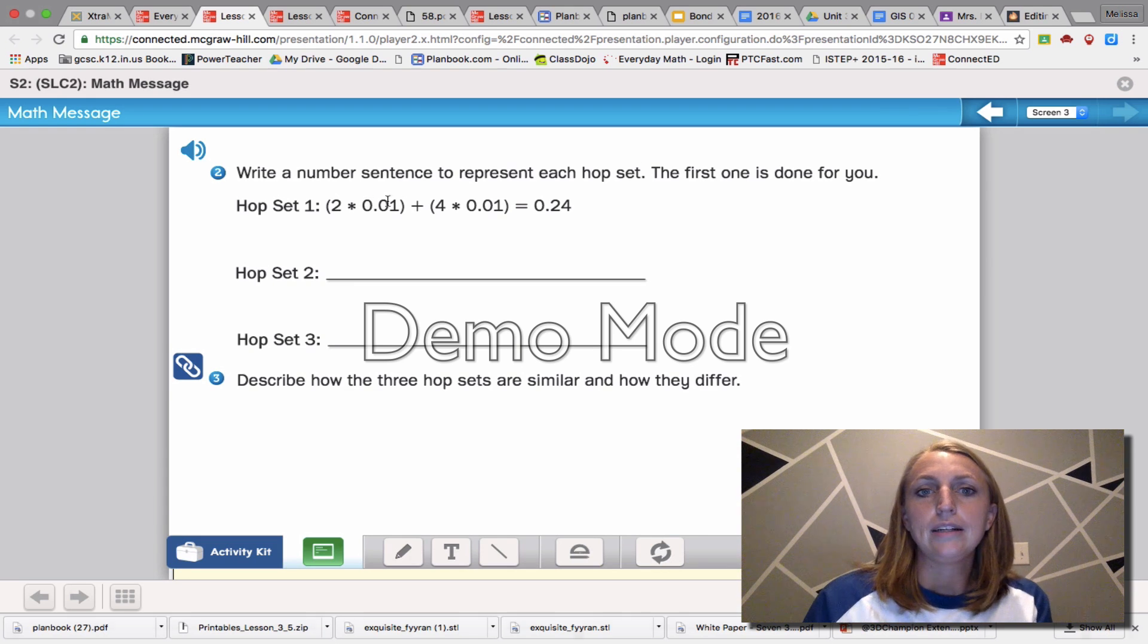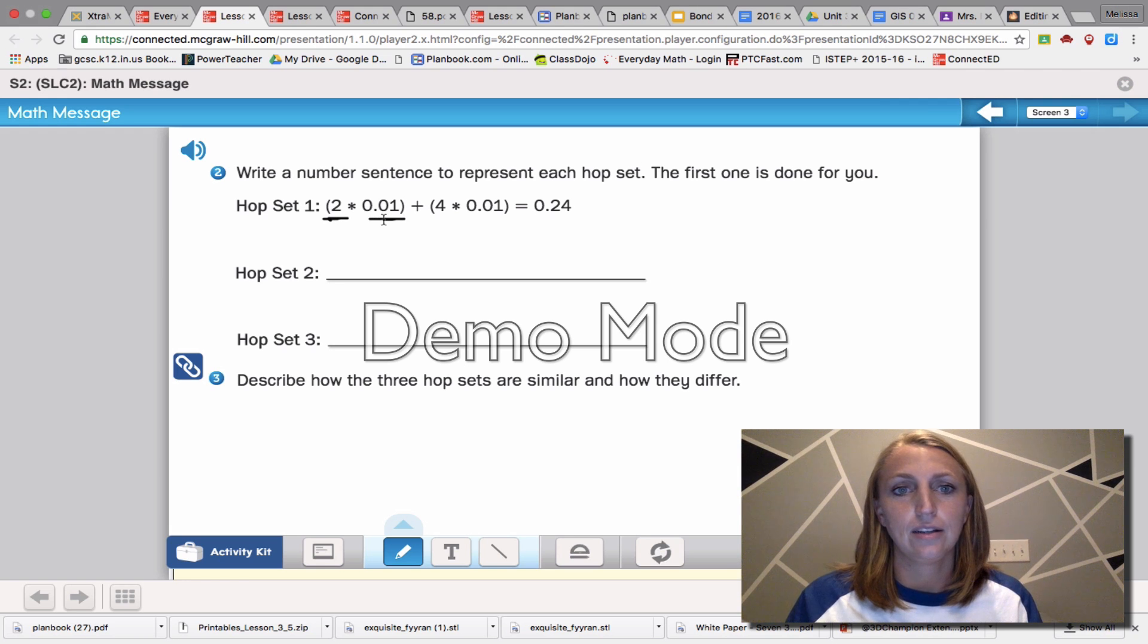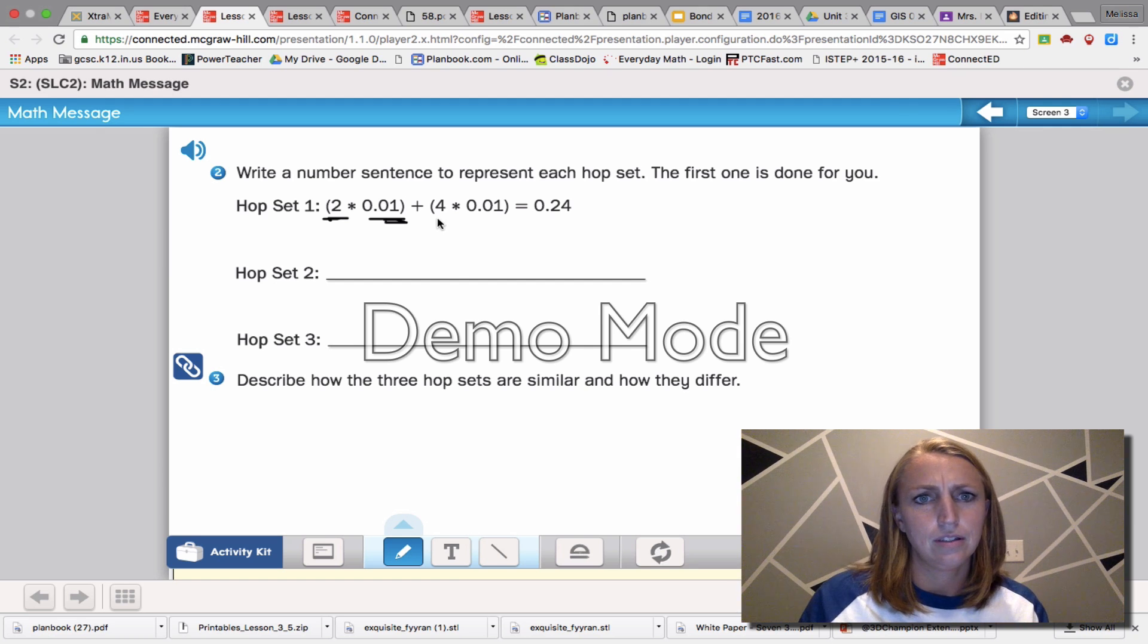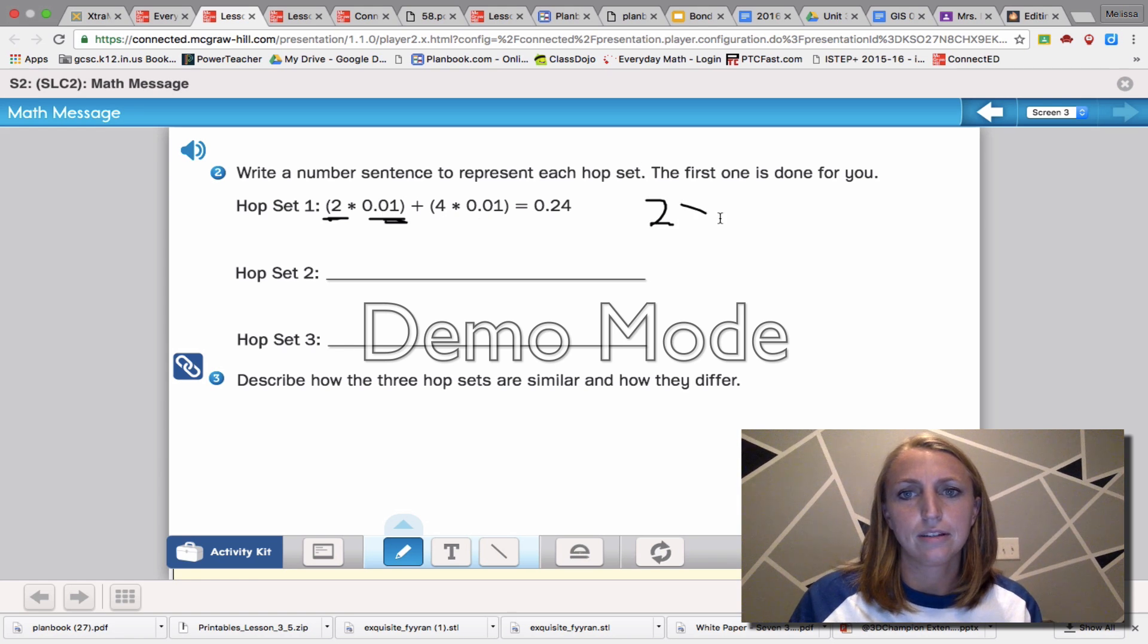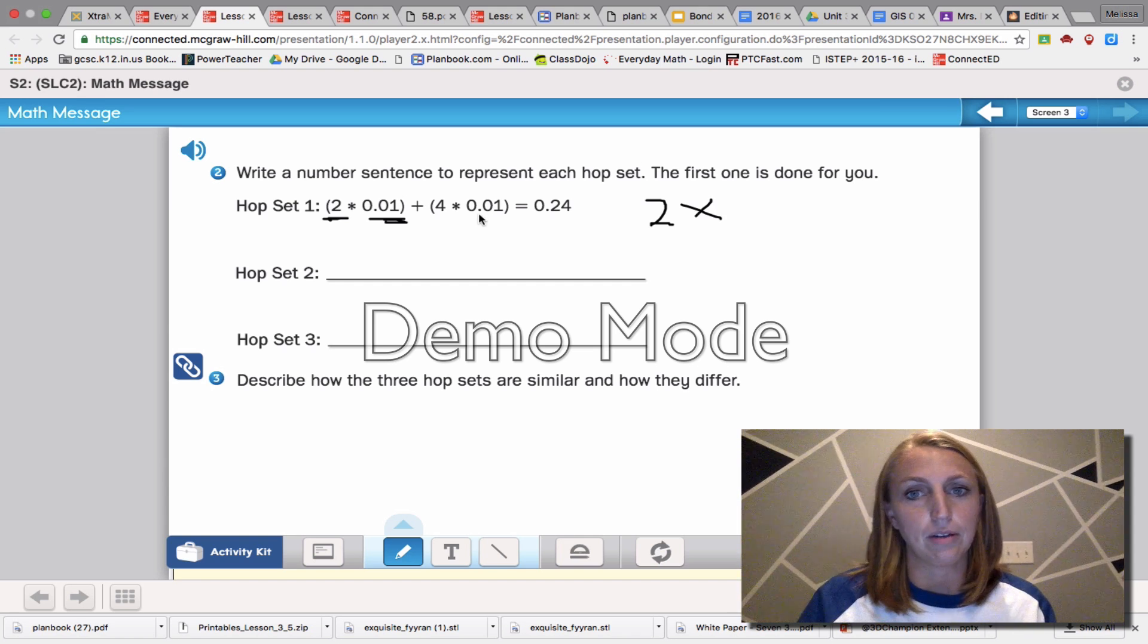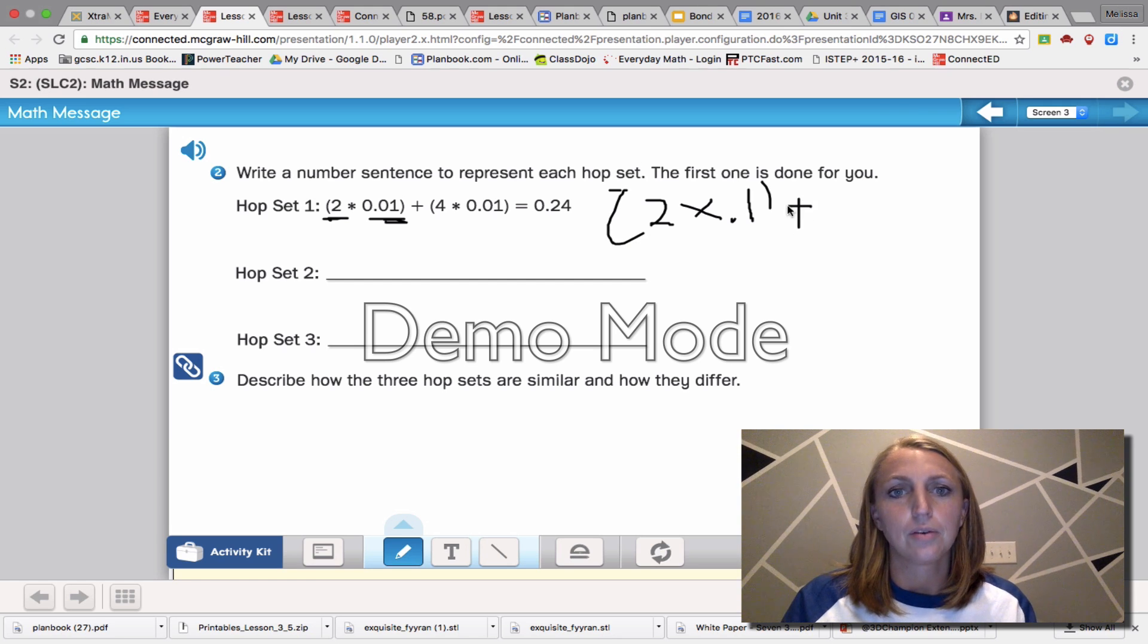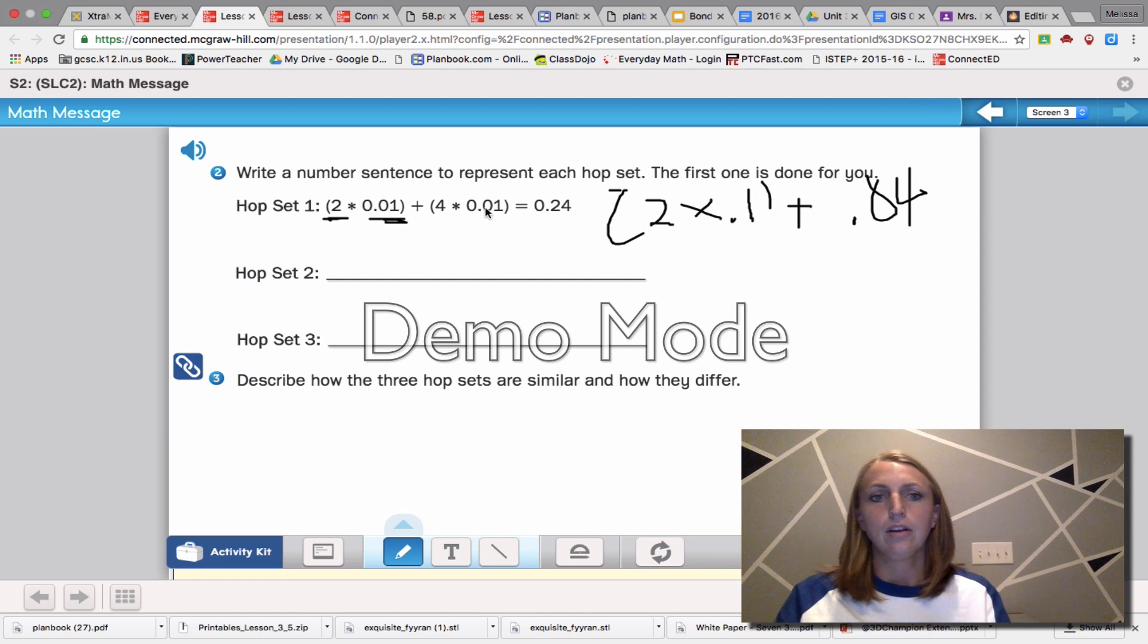Now, what does this have to do with expanded form? Let's move on. Write a number sentence to represent each hop set. The first one's done for you. So this one showed us we did two jumps at one tenth, then four times one hundredth, which gives us point zero four, and if you were to add those together, you have point two four.